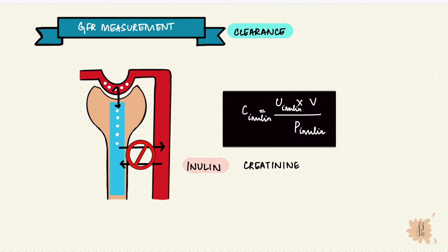Creatinine, therefore, is an effective substitute. Even though a small amount does get secreted into the tubules, creatinine clearance can be used to measure GFR. As the GFR reduces, the creatinine clearance reduces, and hence the plasma creatinine rises.